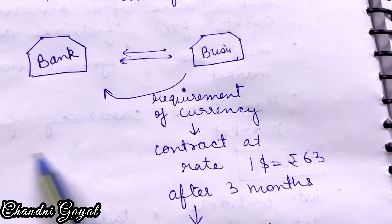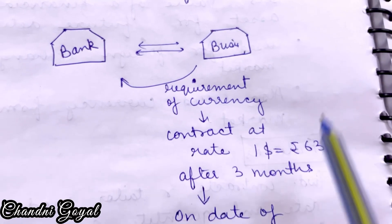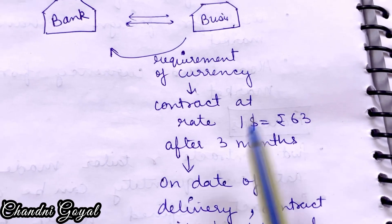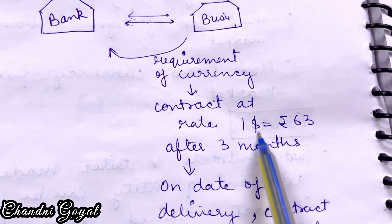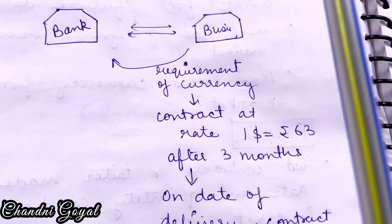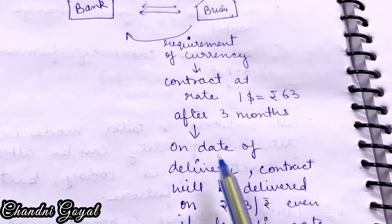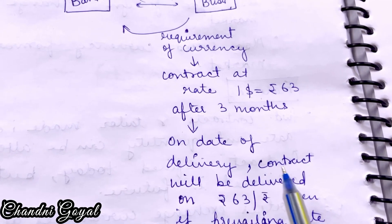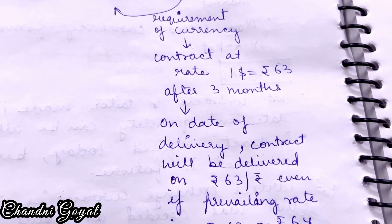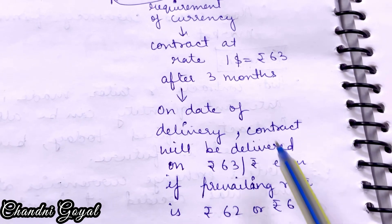For example, a bank and a business: the business needs currency for whatever reason. They go to the bank and say what they need and by what date. A contract is made at the current rate — one dollar equals 63 rupees. After 3 months, the currency exchange will happen.